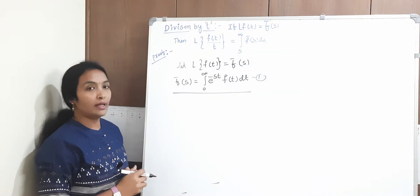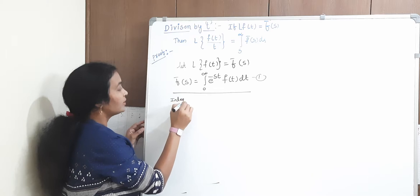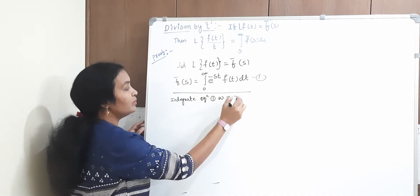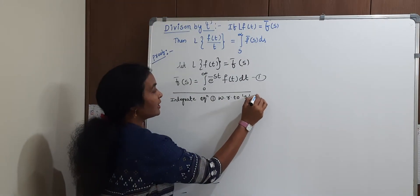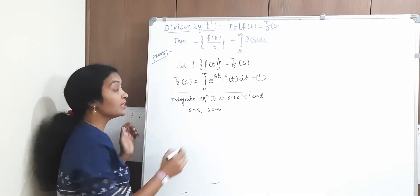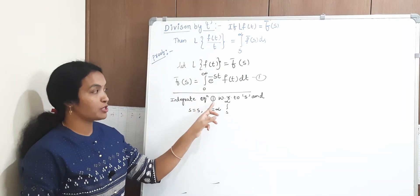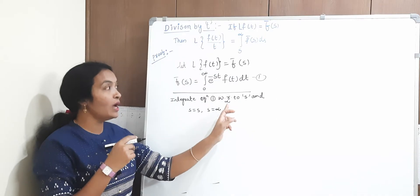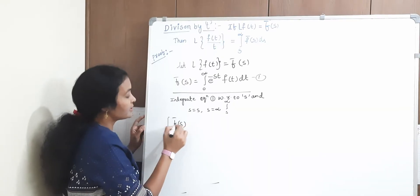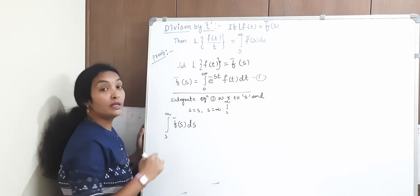Now, integrate equation 1 with respect to s, and the limits should be s equals s to s equals infinity. Integrating both sides of equation 1 with respect to s and applying the limits s to infinity. So on the left side we get the integral of F̄(s) ds, with limits s to infinity.